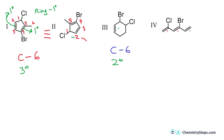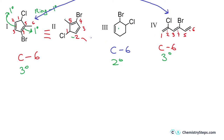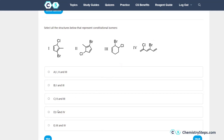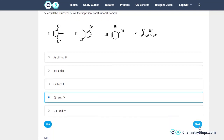The fourth structure on the right has three double bonds, giving three degrees of unsaturation. Counting carbons — one, two, three, four, five, six — confirms six carbons. This is a good candidate and is indeed a constitutional isomer of structures one and two. Structure three is out, so the constitutional isomers are structures one and four, or equivalently two and four. Checking the answer options, we select one and four.